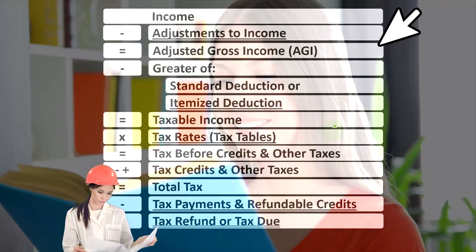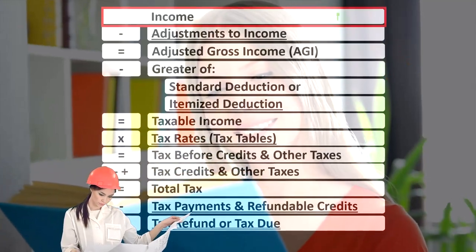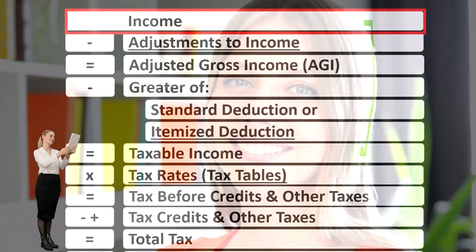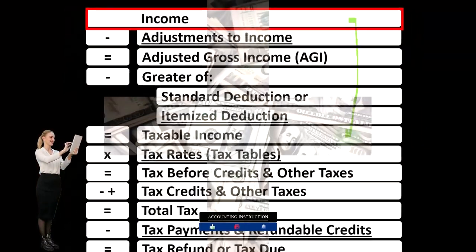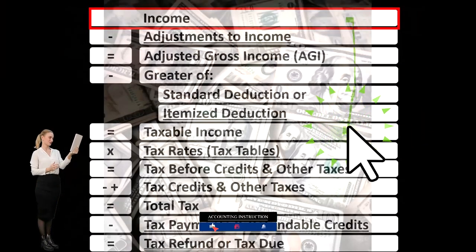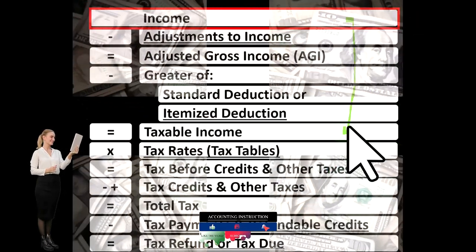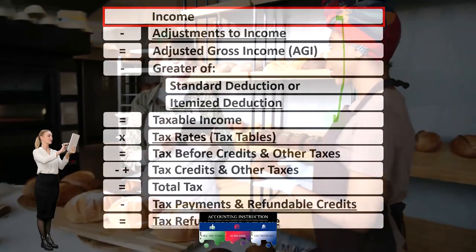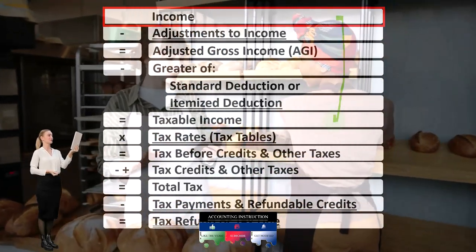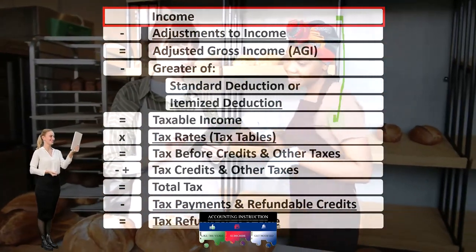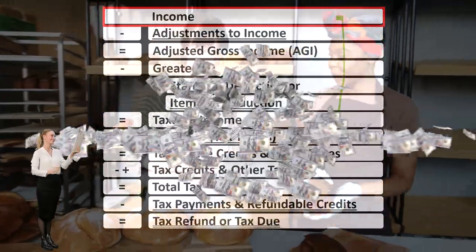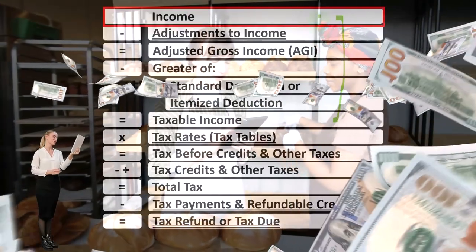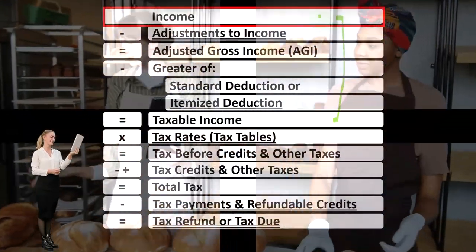Looking at the income tax formula, we're focused on line one income, remembering that the first half of the income tax formula is in essence an income statement — although just an outline or scaffolding with other forms and schedules flowing into it. For example, the Schedule C business income, which is in essence another form of income statement, having income minus expenses or business deductions, with the net income then flowing into line one income of the income tax formula.